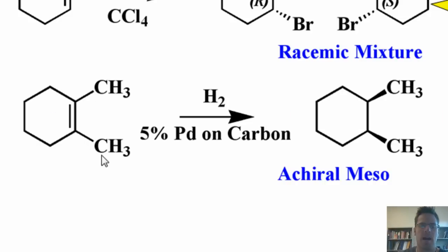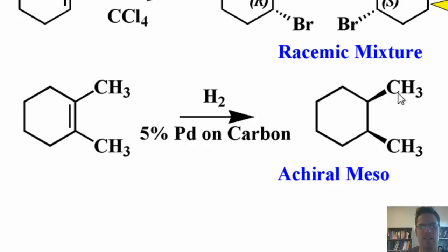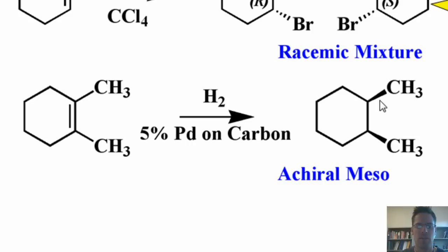Note once again the principle: I threw achiral reagents and reactants into this pot and therefore will only form achiral products. Now, if you were to draw the other cis version of this molecule — that is, with both methyls attached to dashed bonds going down — you'll note that if I flip it upside down like a pancake, it is exactly the same as the molecule with both methyls attached to wedged bonds coming up.